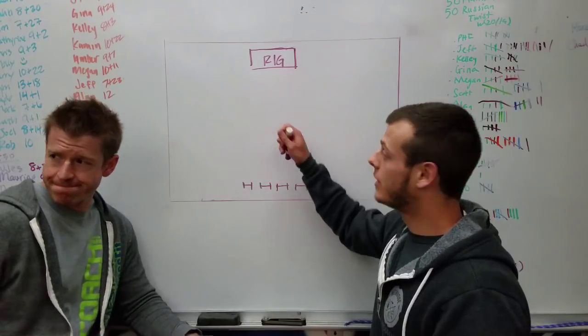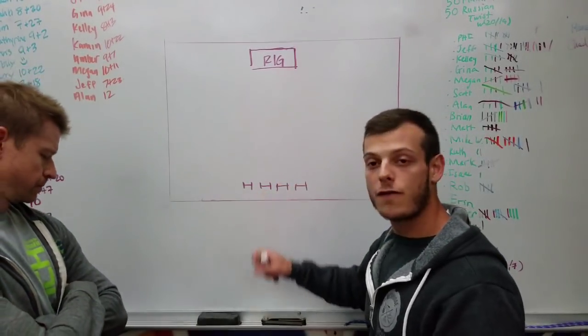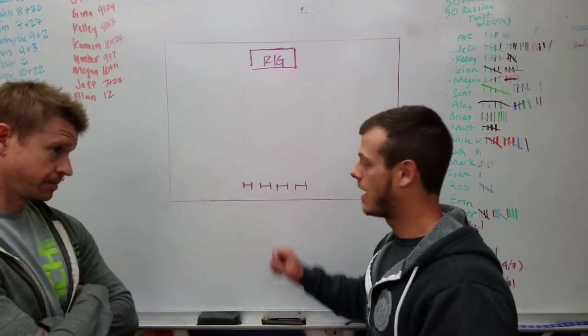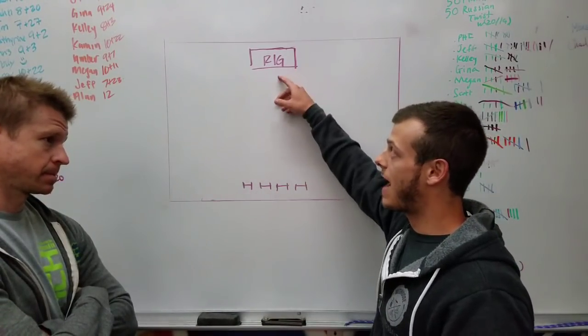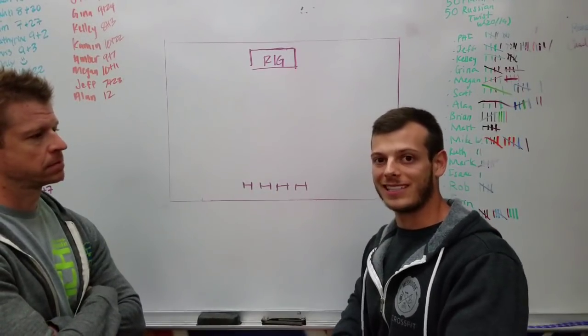You will then relay back up, you got 40 synchro bar muscle ups, relay back down, 40 synchro clusters, and then that last relay back through when that fourth person crosses the finish line up under the rig, your time will be complete.